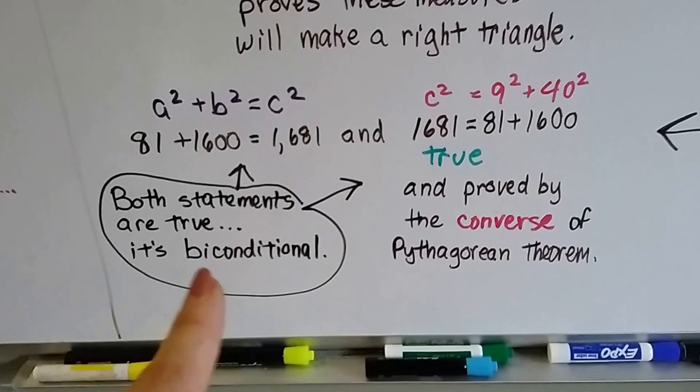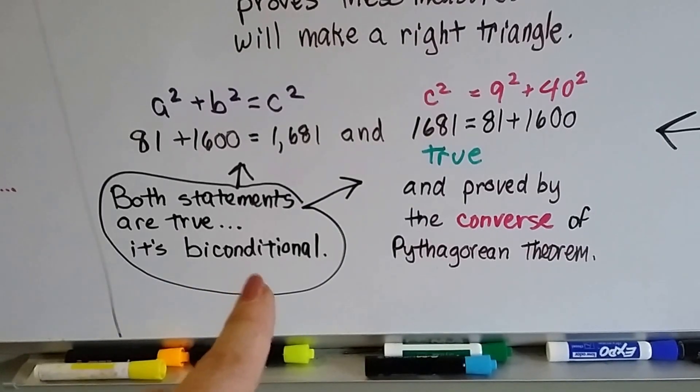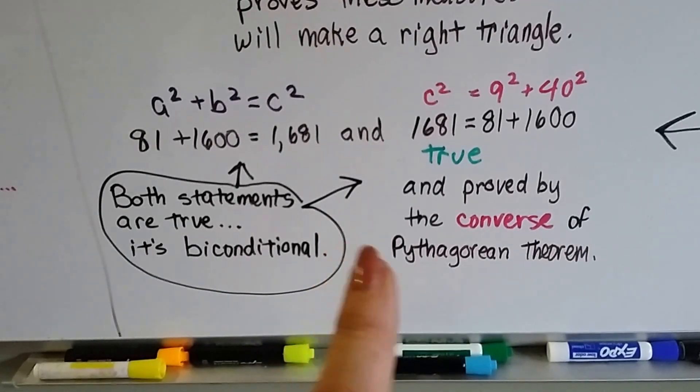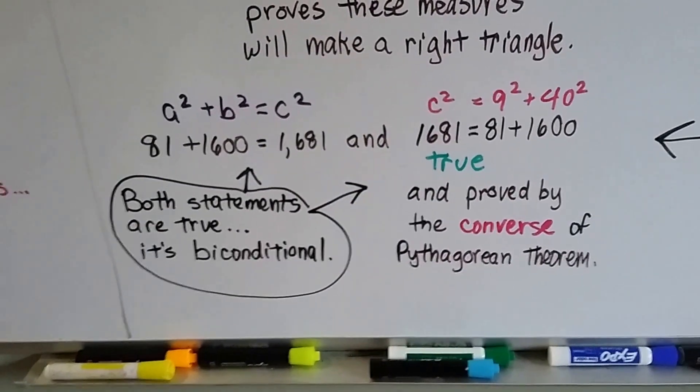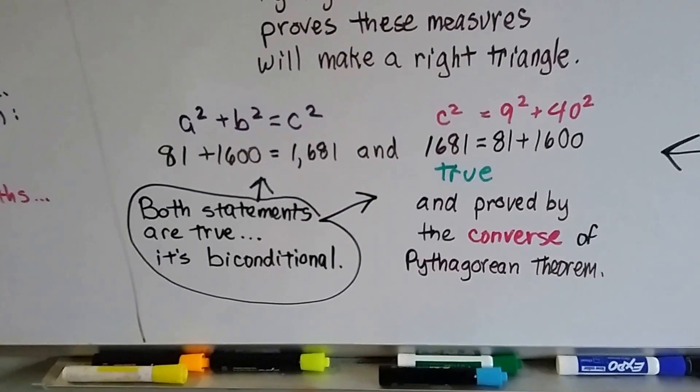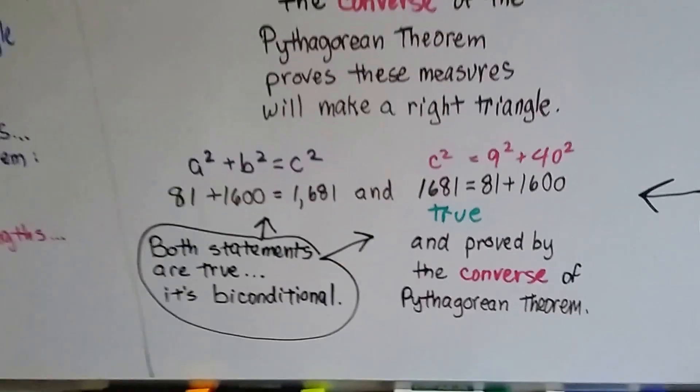And both statements are true. This is called biconditional, by the way. And it's proved by the converse of the Pythagorean theorem. So remember, if you have two measures, use the Pythagorean theorem. If you have three measures, use the converse.